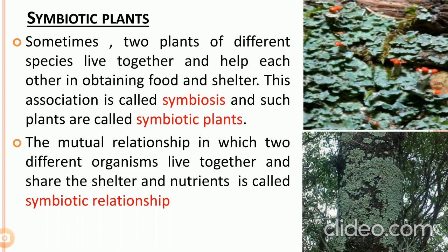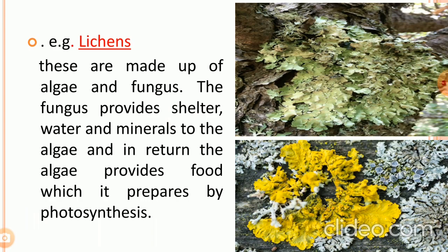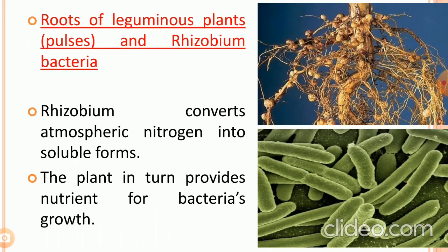Next, we have symbiotic plants. Sometimes two plants of different species live together and help each other in obtaining food and shelter. This association is called symbiosis, and such plants are called symbiotic plants. The mutual relationship in which two different organisms live together and share shelter and nutrients is called a symbiotic relationship. One example is lichens, which are made up of algae and fungus. The fungus provides shelter, water, and minerals to the algae, and in return the algae provides food prepared by photosynthesis. A second example is the roots of leguminous plants and Rhizobium bacteria.